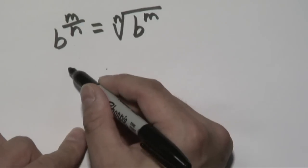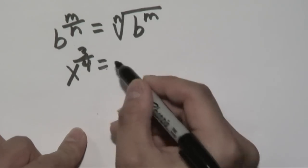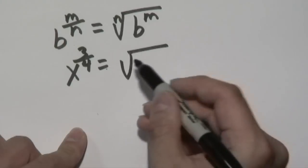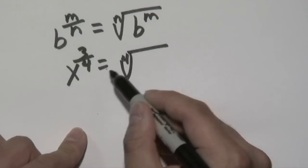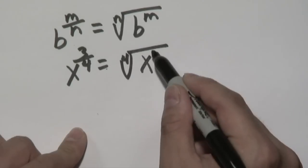So for example, if you have x to the 3 fourths, this can be converted to a fourth root and x to the third power.